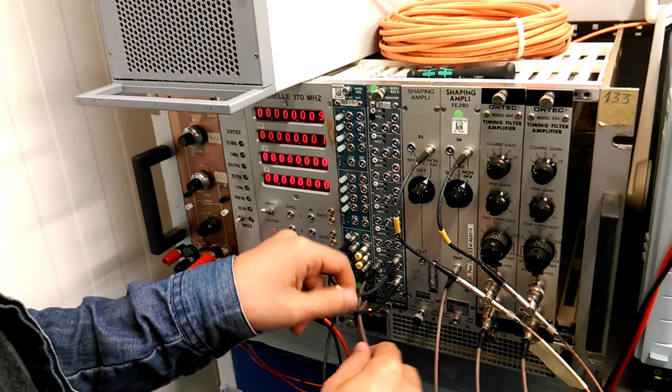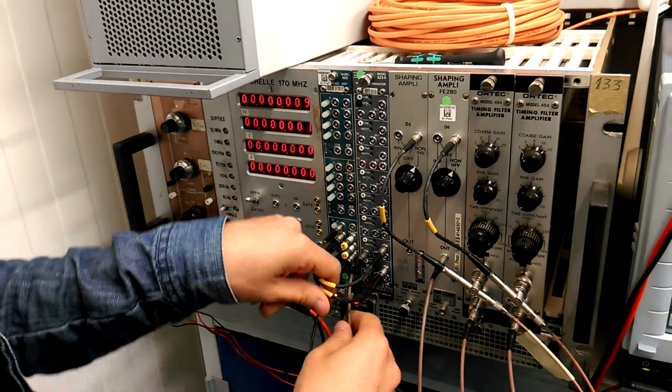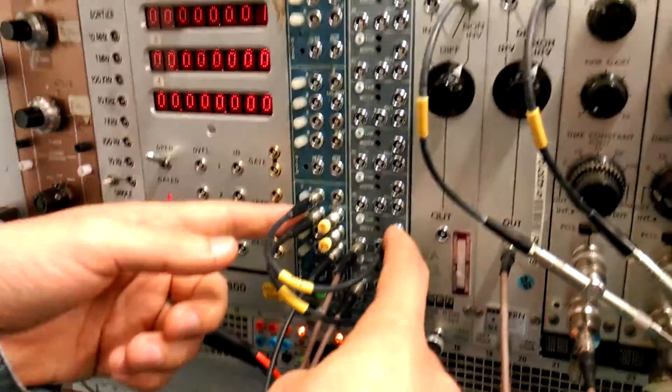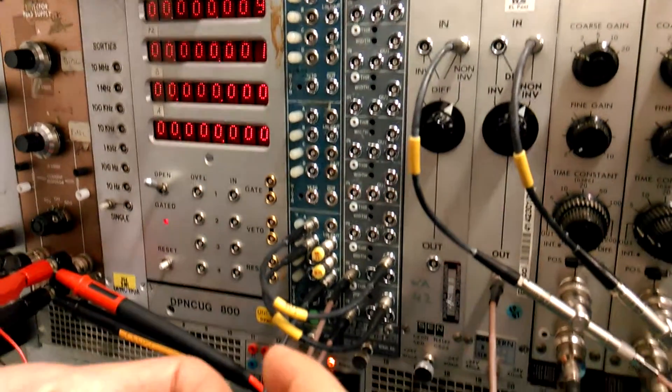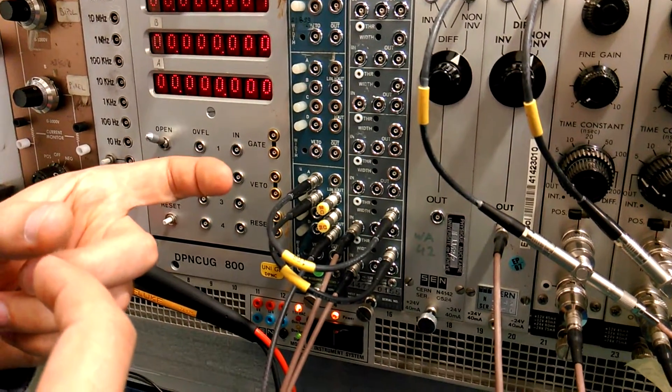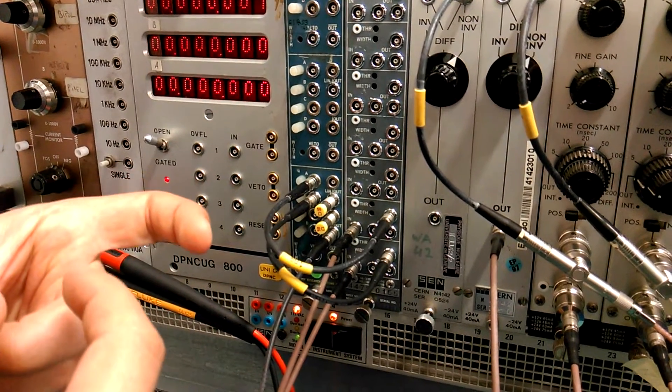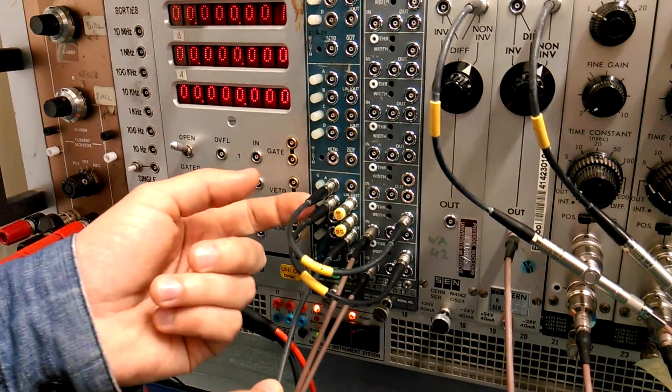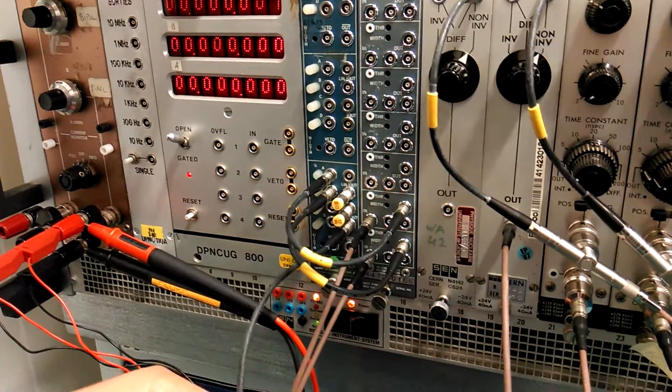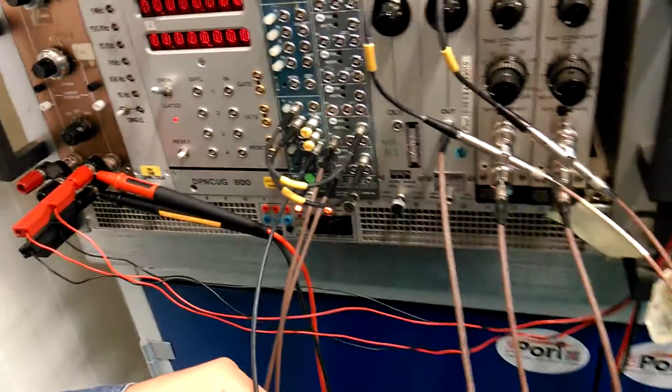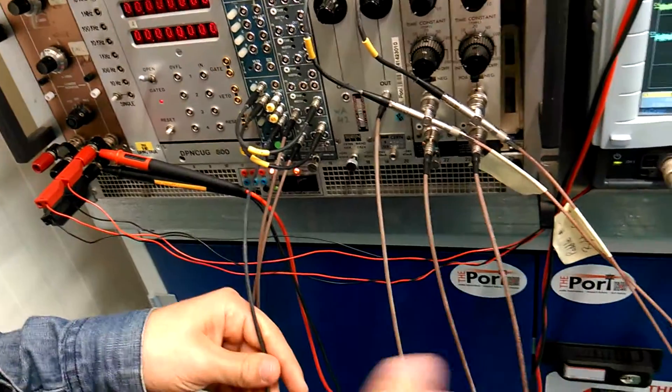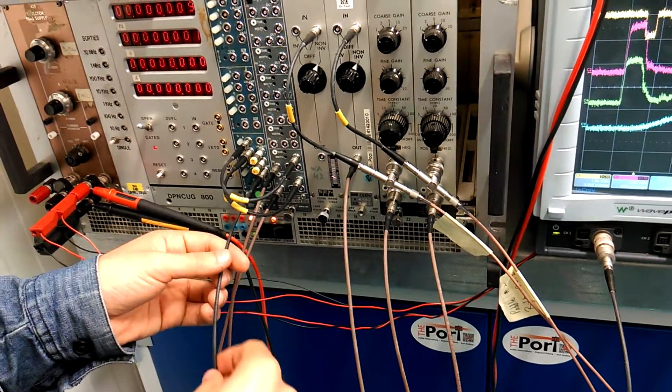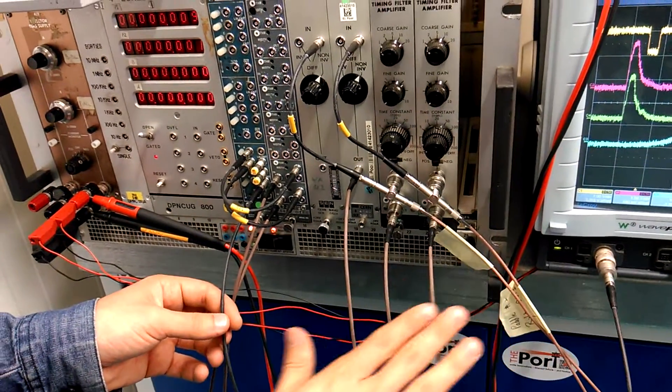Then these two signals we send to a coincidence unit which generates a signal if those two overlap. Basically, if we have two signals appearing at the same time, it generates another signal which is the coincidence between those two. This signal is actually our trigger, the signal we will use in electronics to initiate the digitization of the analog signal.